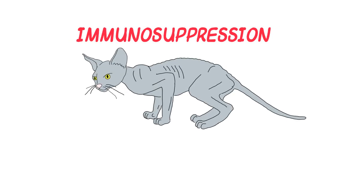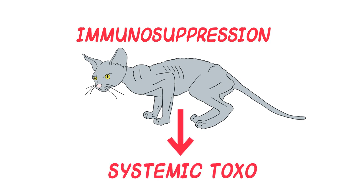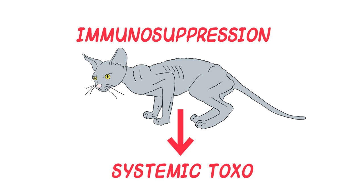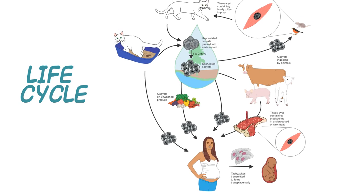Immune-suppressed adults — for example, a cat with feline immunodeficiency virus — can develop generalized disease. How is toxo transmitted? In order to understand the presentation of this disease, it's time that we talk about the life cycle.